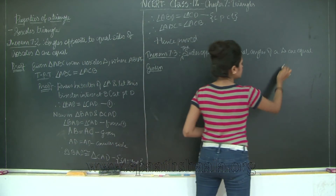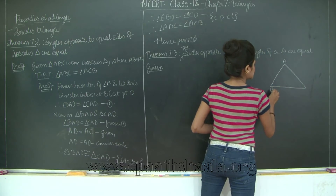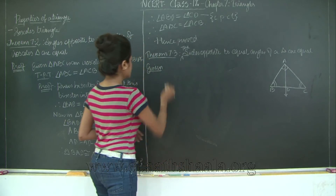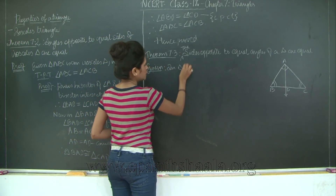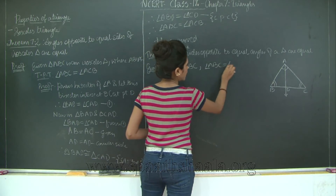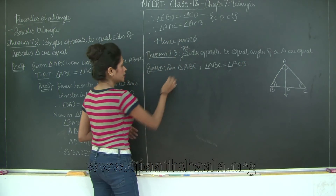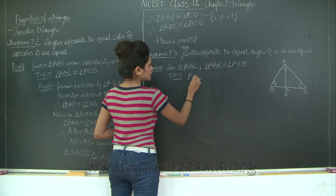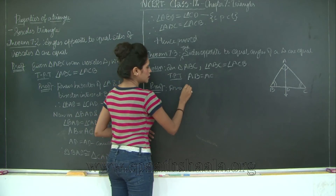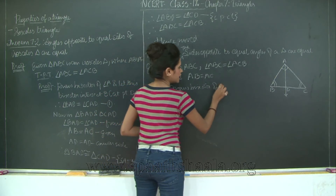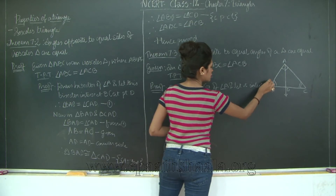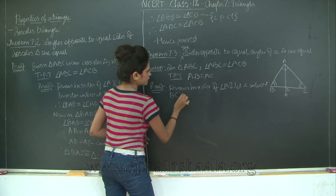Let us draw a diagram for triangle ABC. Given: in triangle ABC, angle ABC is equal to angle ACB. To prove: AB is equal to AC. For the proof, draw the bisector of angle A and let it intersect BC at point D.